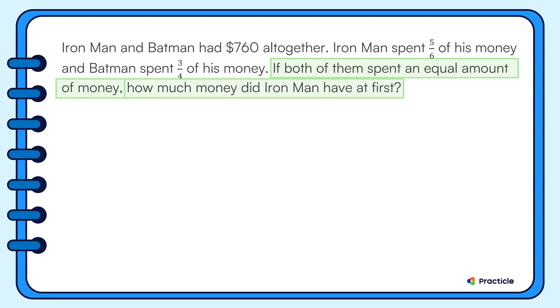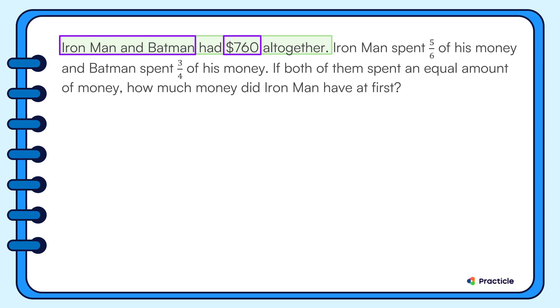Let's break down this problem step by step. Iron Man and Batman had $760 altogether. We're given the total amount of money that two people had, but we can't really tell what kind of model to draw yet. So, let's continue reading to see what else we're given.